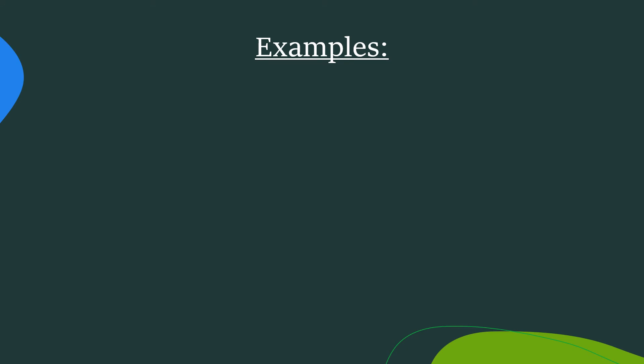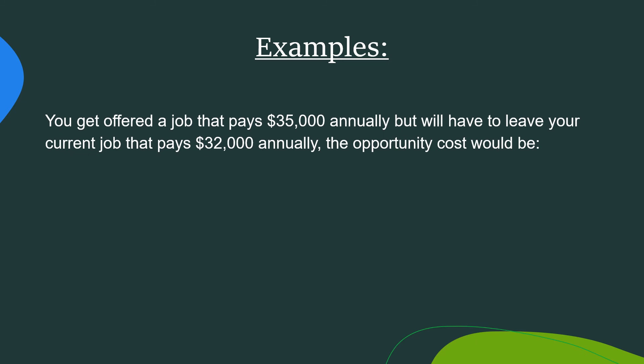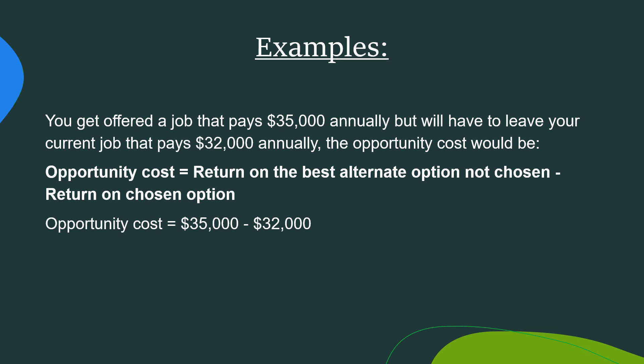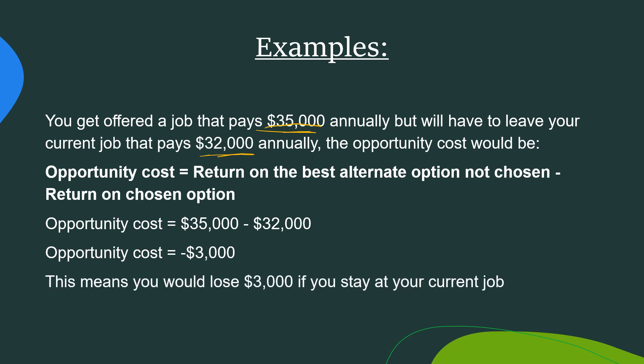Now let's look at a few examples of how to calculate opportunity cost. You get offered a job that pays $35,000 annually but you would have to leave your current job that pays $32,000 annually. So how will we calculate the opportunity cost? Using the formula: opportunity cost equals the best alternative option not chosen minus the return on the chosen option. Our opportunity cost will be $35,000 minus $32,000, which gives us $3,000. This means you would lose $3,000 if you stay at your current job.